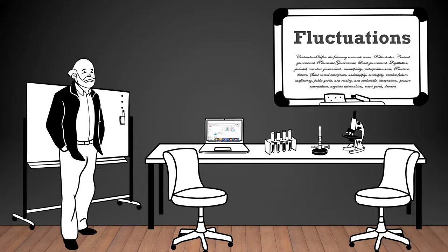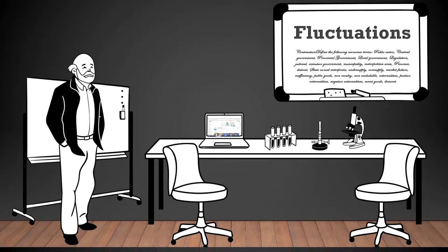Fluctuations in economics refer to the ups and downs in various economic indicators such as production, employment, prices, and income, which are part of the business cycle.